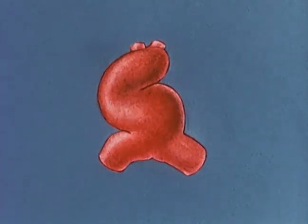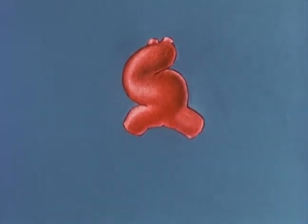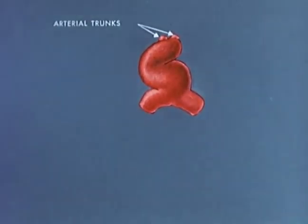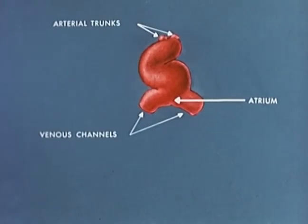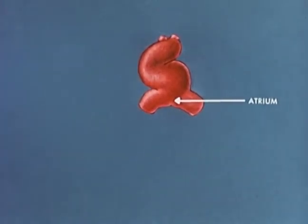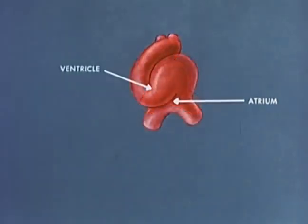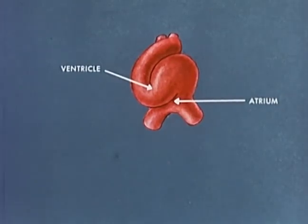Initially, the heart consists of a simple tube. It's anchored at one end by the differentiating arterial trunks and at the other by extensive venous channels which drain into the atrium. Being fixed at both ends, the cardiac tube grows rapidly in length and the embryonic ventricle is bent into a loop to the right of the midline.